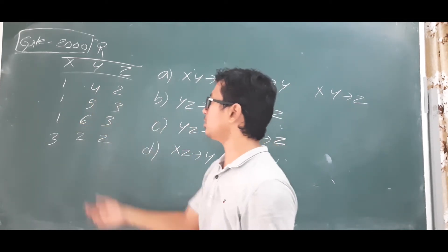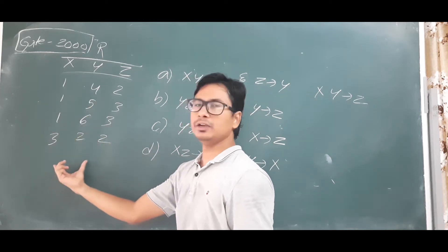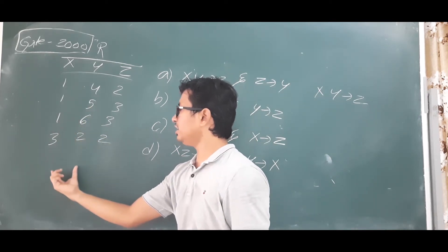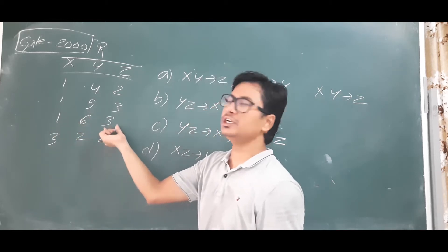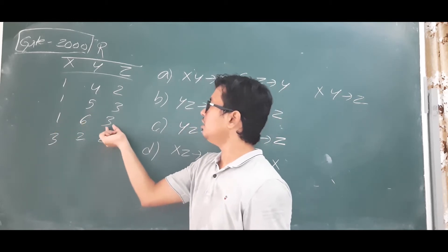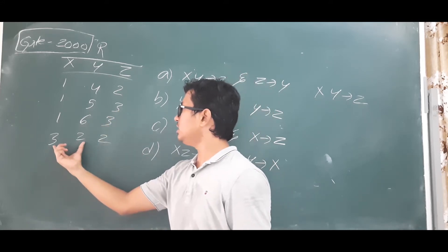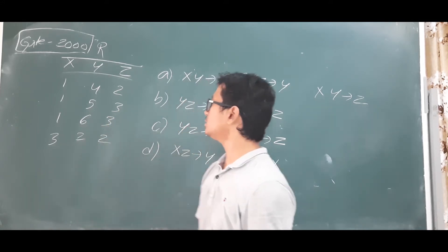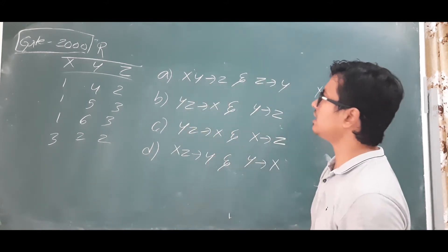For (1,6) — is it repeating? No. If a value is distinct, we don't need to check further, because a distinct input will obviously have only one output. For (3,2) — is it repeating? No. So XY determines Z is a valid functional dependency.